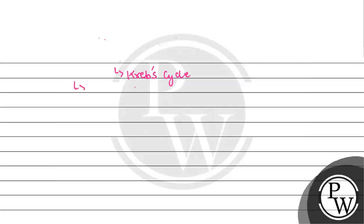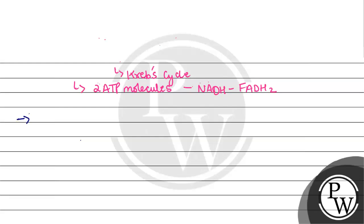Regarding the energy yield of the Krebs cycle: it produces two ATP molecules, along with several NADH and FADH2 molecules, which are high-energy carriers. These NADH and FADH2 molecules proceed further into the next stage of the process.